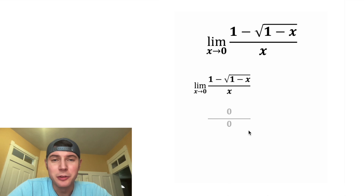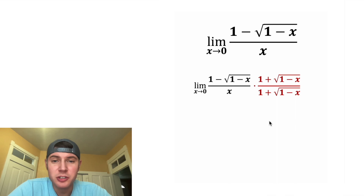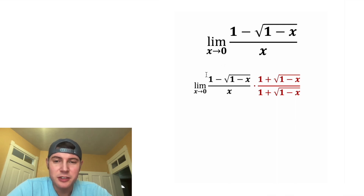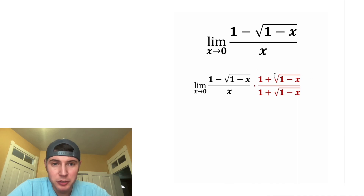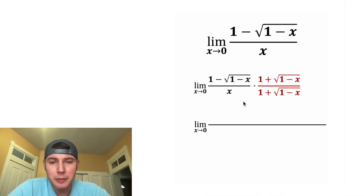So we have to find another way to solve this. I'm seeing a binomial that includes a square root, so usually you're going to use the conjugate. In this case, we have 1 minus the square root, so the conjugate would be 1 plus the square root. We're going to multiply that to the top and bottom so we're not actually changing the value of the rational expression.